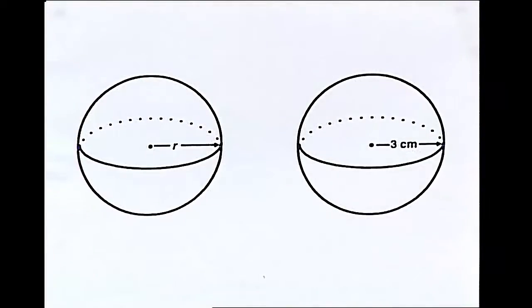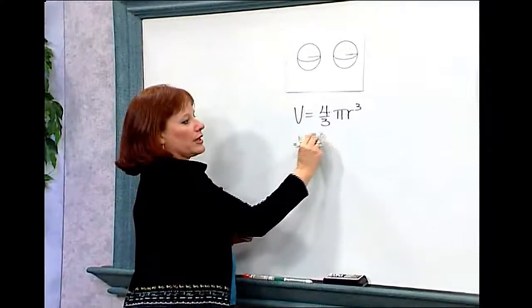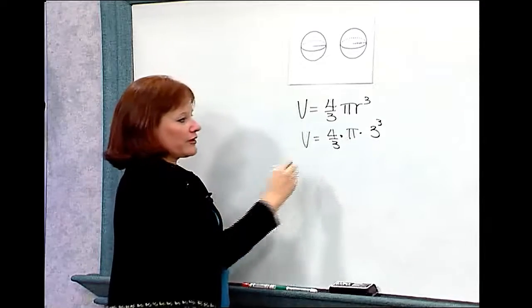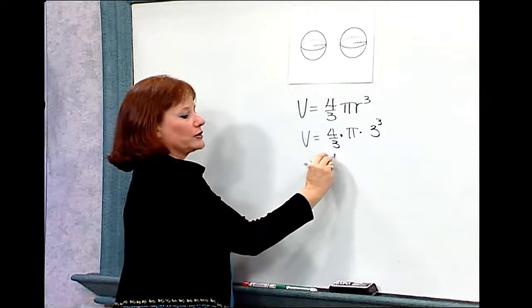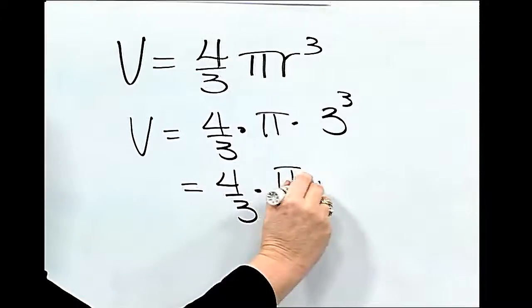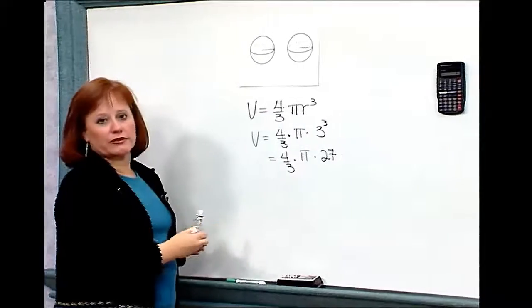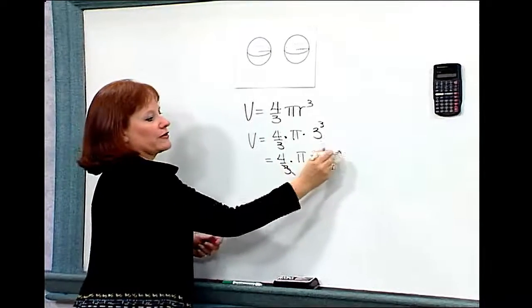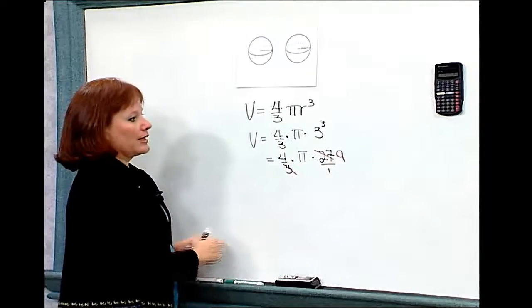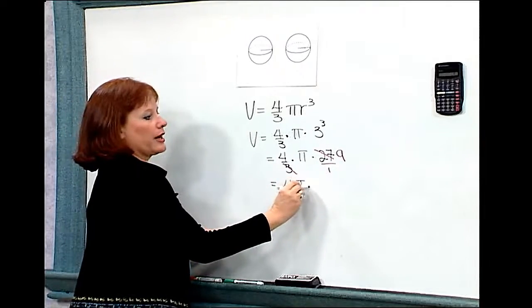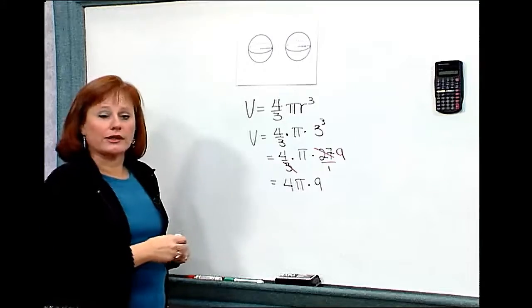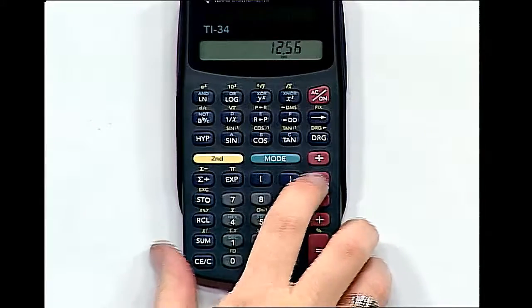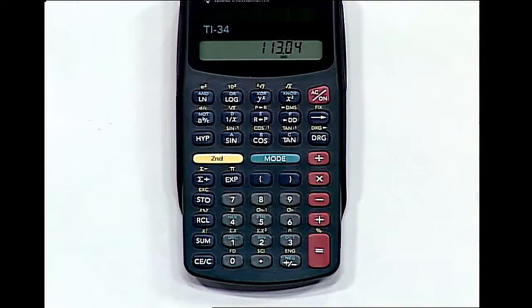In this case, we have a sphere with a radius of 3 centimeters. So the volume is four-thirds times pi times 3 to the third power. I can simplify before going to the calculator: four-thirds times pi times 27. Since 3 goes into 27 nine times, the answer is 4 times pi times 9. Using the calculator: 4 times 3.14 times 9 gives a volume of 113.04.